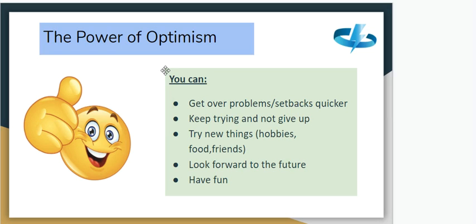It links very much to zest — trying to be optimistic, because there's a lot of power behind optimism. Things that you can do if you are optimistic: you can get over problems and setbacks quicker, you can keep trying and not give up — that links to perseverance — you can try new things like new hobbies or making new friends, you look forward to the future, and you're more likely to have fun.